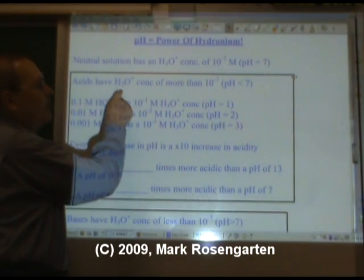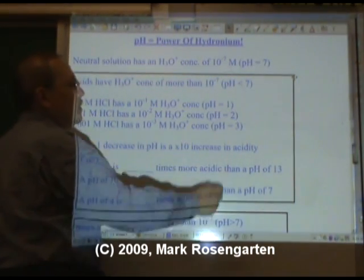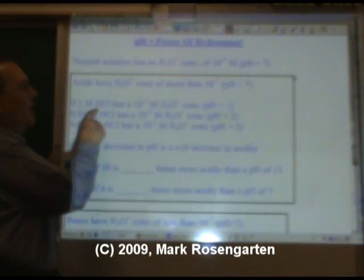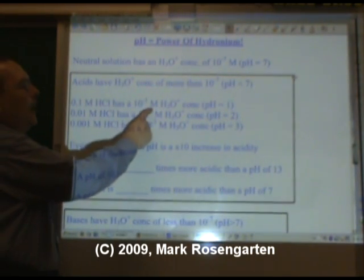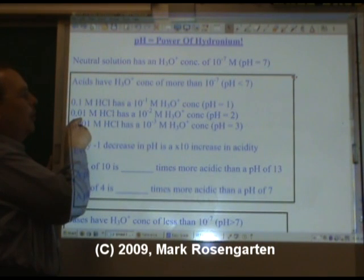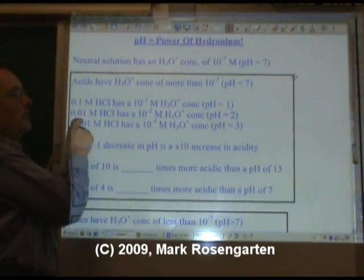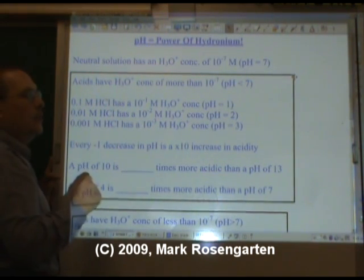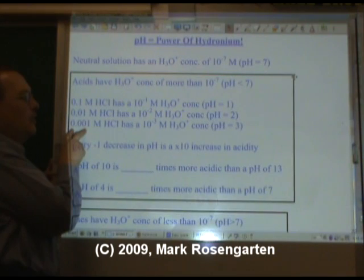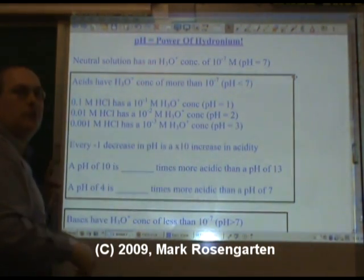Acids have to have a hydronium ion concentration of more than 10 to the negative 7th, which means the pH will be less than 7. For example, 0.1 molar HCl has a 10 to the negative first molar H3O plus concentration. Negative log of that is 1. A 0.01 molar HCl solution is 10 to the negative second, 10 to the negative second molar hydronium ion concentration. That's a pH of 2. A 0.001 molar HCl has a 10 to the negative third molar H3O plus concentration. That's a pH of 3.